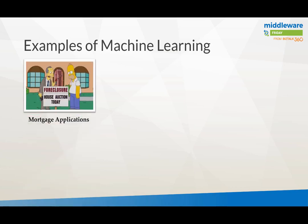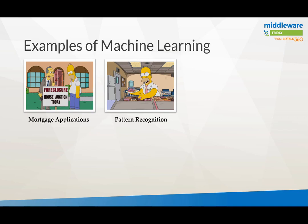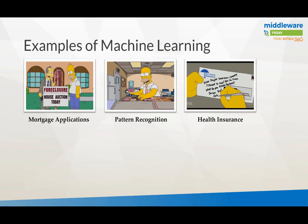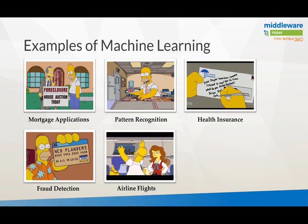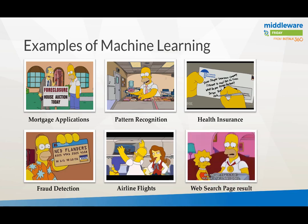Examples of machine learning include mortgage applications — assessing whether you are or are not going to pay off your mortgage, which I'll demonstrate later. It can be pattern recognition, health insurance — predicting based on your habits whether you're likely to develop certain diseases. It's also very common in fraud detection: if you spend money in the US and then an hour later in Europe, that could be flagged as fraud. Airline flight pricing optimization is another use case, as well as web search results — for instance, Google's algorithms for search.